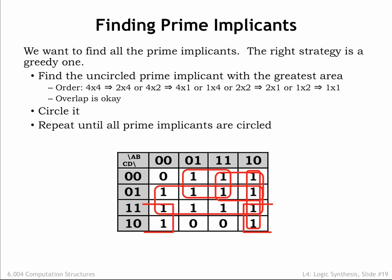Notice that we're always looking for the largest possible implicant, subject to the constraint that each dimension has to be either 1, 2, or 4. It's these largest implicants that will turn out to be prime implicants.